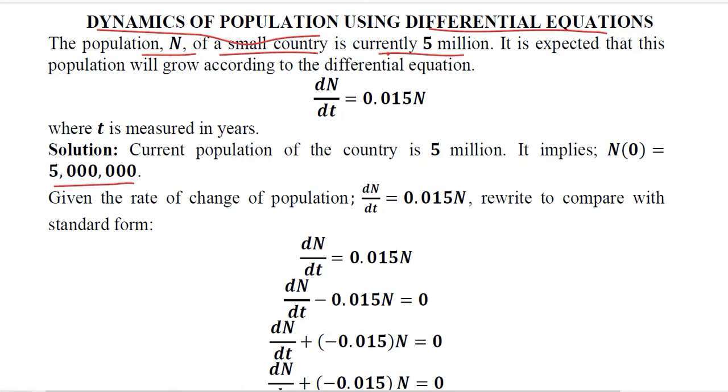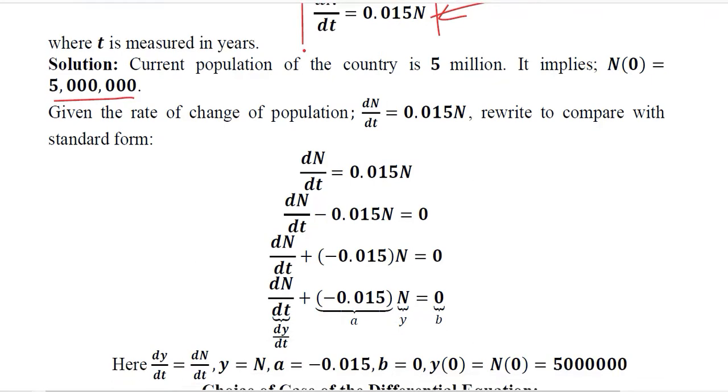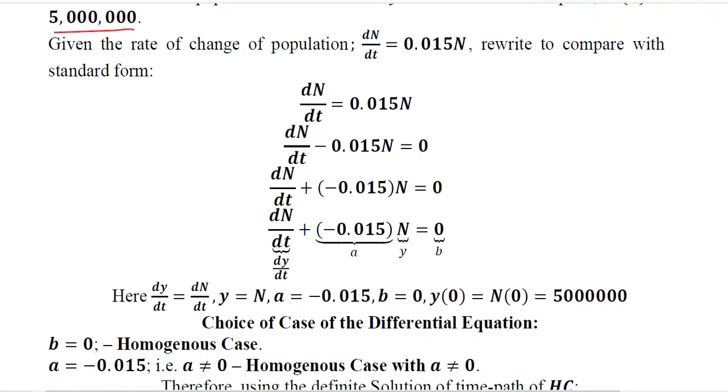This population is expected to grow at this rate, dN/dt. Over time it grows with this certain rate which is modeled by this equation. We try to solve it and get the time path, the dynamic equilibrium of the population function.